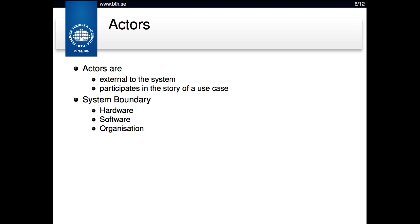The system boundary can be tricky to define because it's not a clear-cut line what is inside versus outside the system. For example, the hardware — the actual terminal — can be the system boundary, meaning all software subsystems inside that machine are within the boundary. Contacting the bank could be seen as part of the system, or if we put the boundary at the point-of-sale software itself, the bank becomes an external actor. You may also take a bigger picture where the entire organization is the system, with many different subsystems, machines, and internal actors collaborating to fulfill requests.